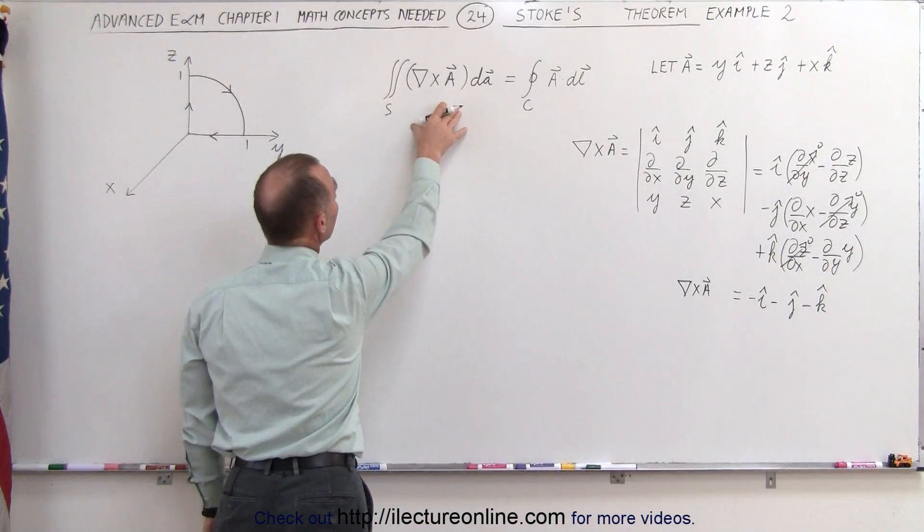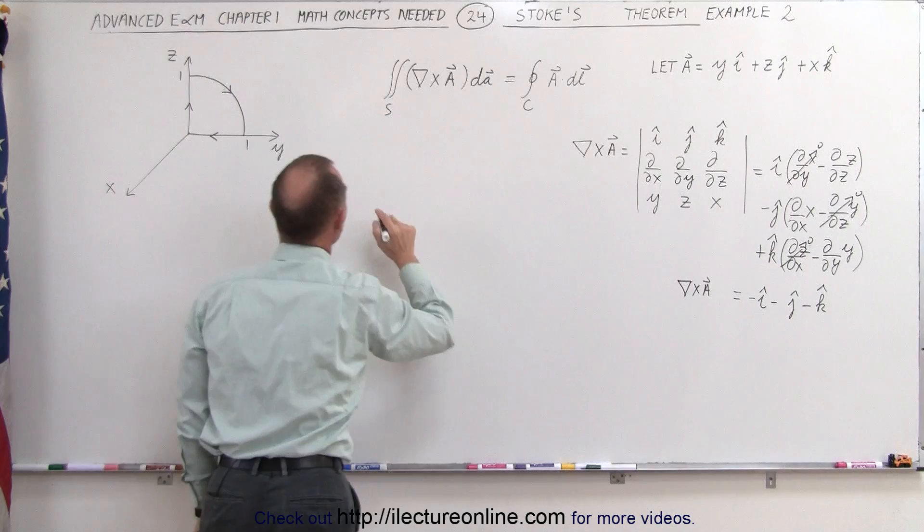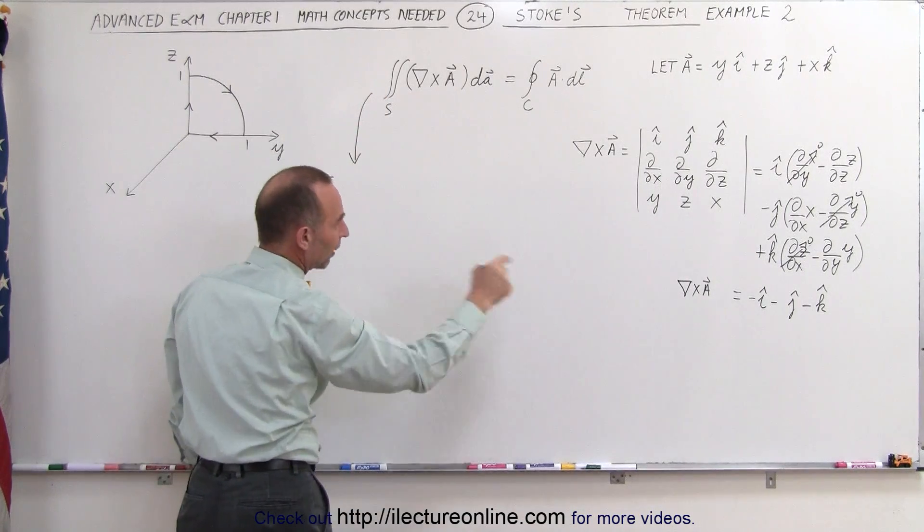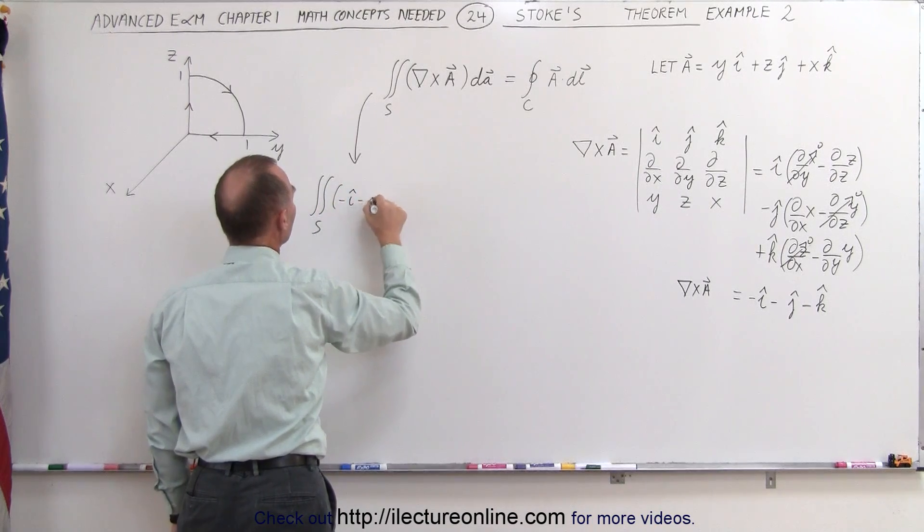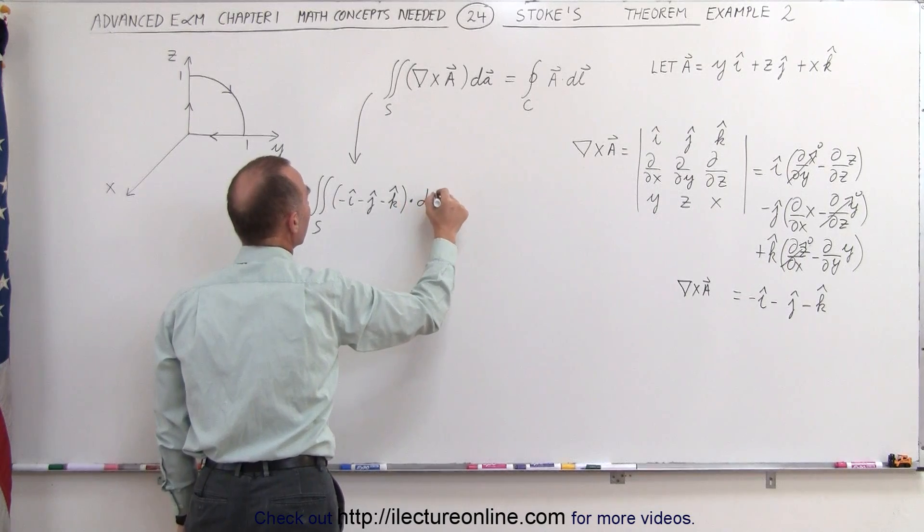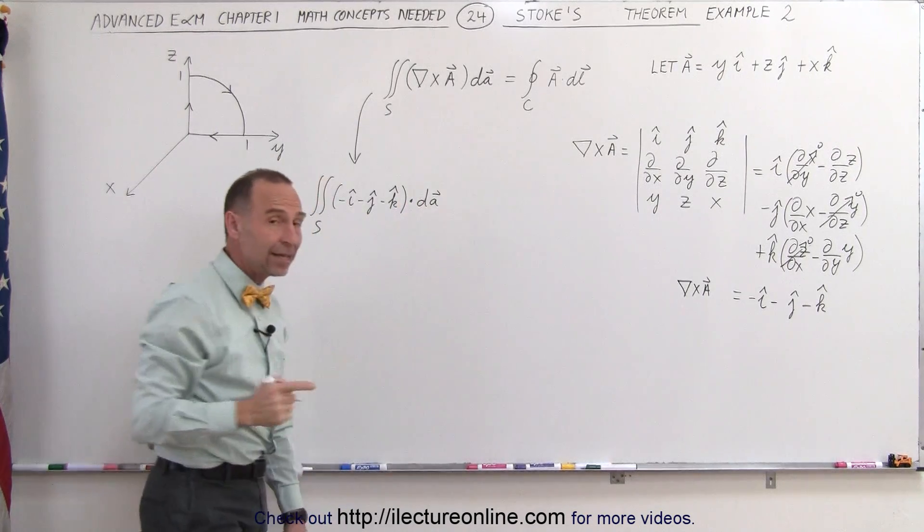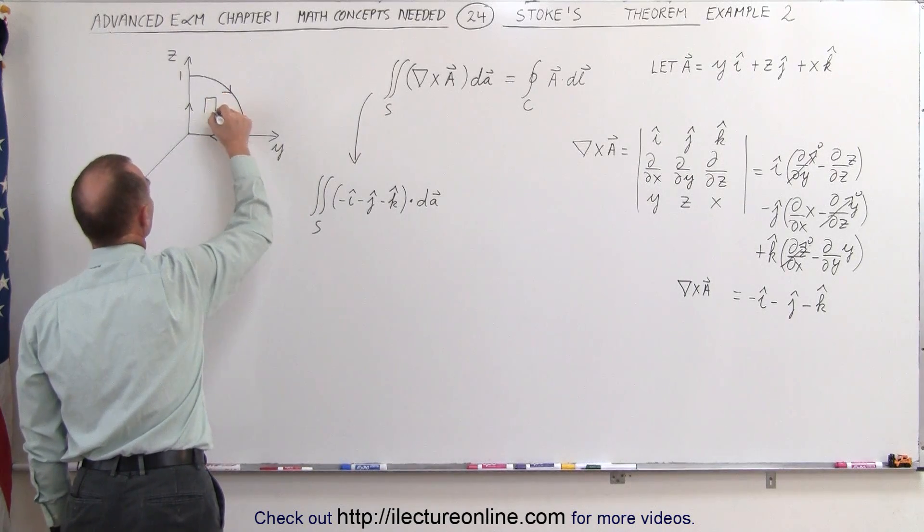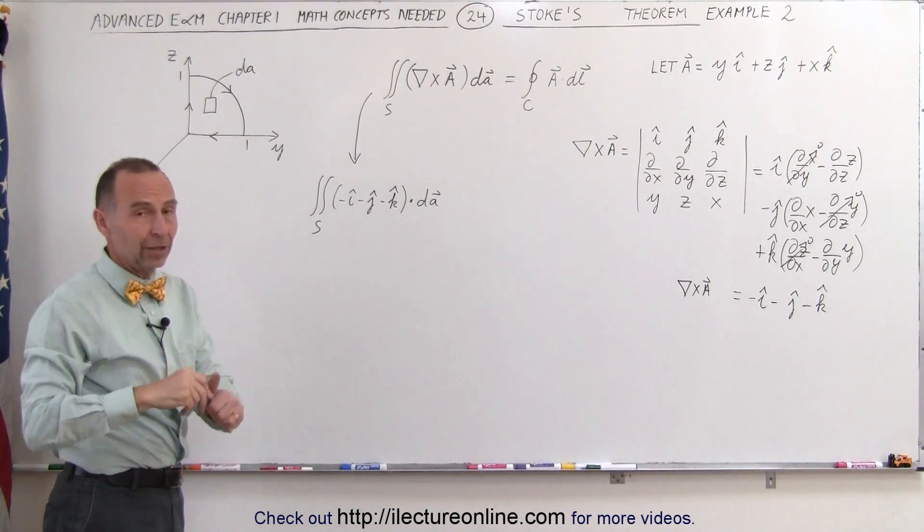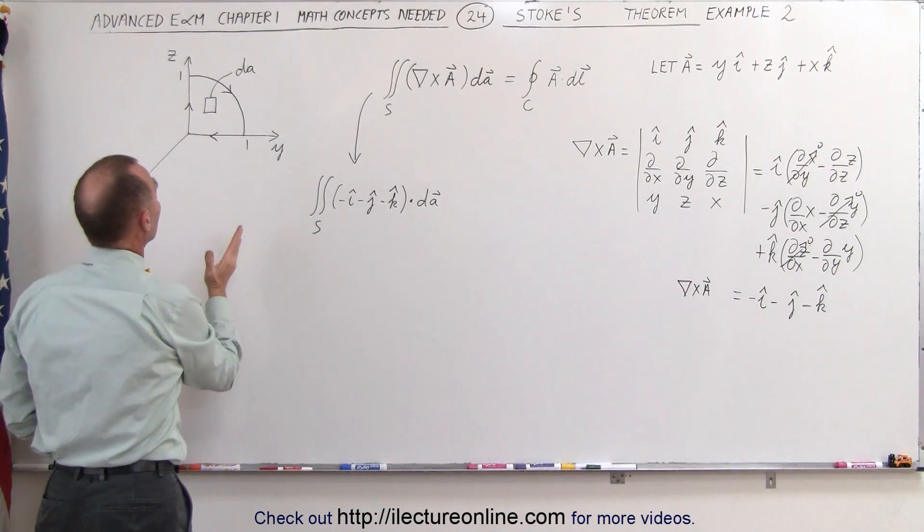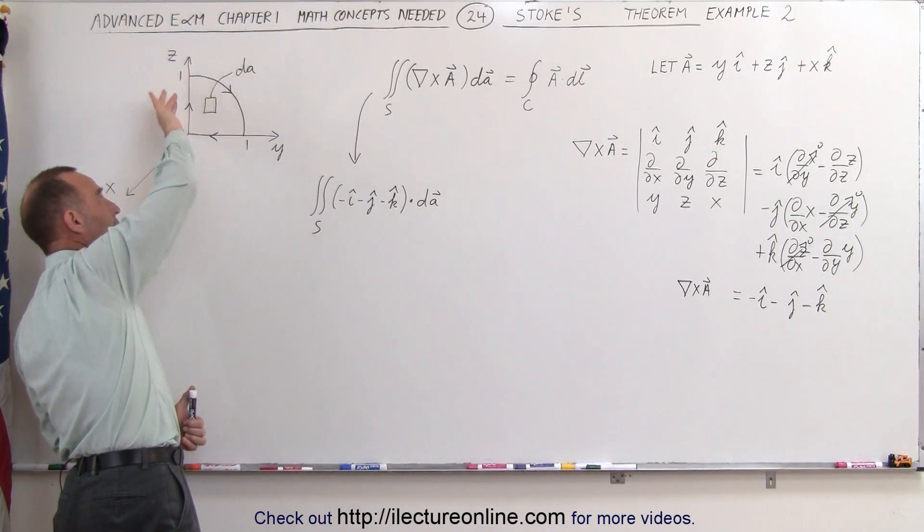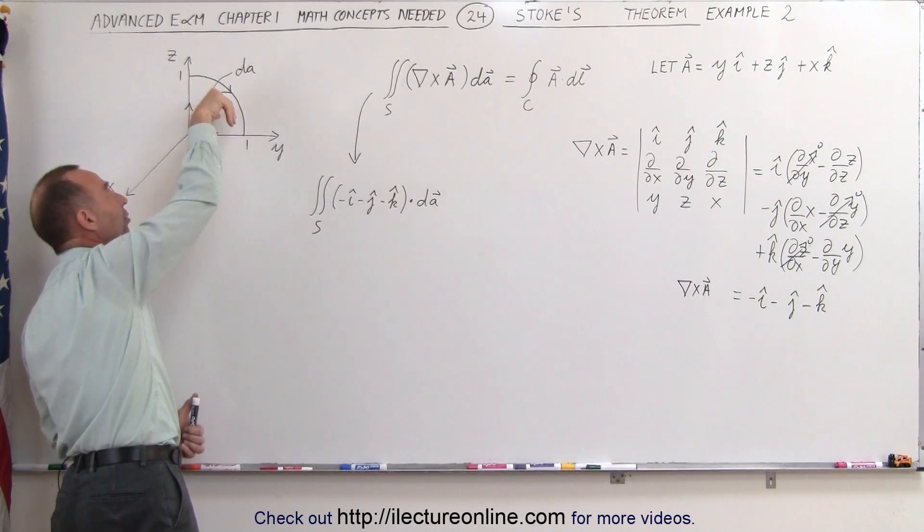Now the next thing we do is we plug that in here, and we multiply that times dA. So this here becomes the surface integral of the curl of A, which is minus i, minus j, minus k, dotted with dA. Now, of course, dA can be written, that's a small little area element right here, and this here would be our small little dA, and the unit vector, again, use your right-hand rule, but now what you need to do is, you need to use your fingers, you're going to go around the curve like this.